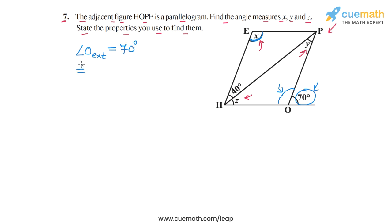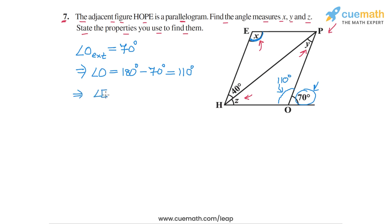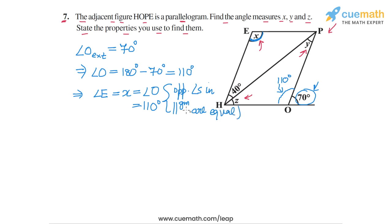So the interior angle at O will be 180 degrees minus 70 degrees, which equals 110 degrees. Angle H-O-P is 110 degrees, and this means the opposite angle will also be equal. So angle E, which is X, equals angle O, which is 110 degrees, because opposite angles in a parallelogram are equal. The measure of X is 110 degrees.